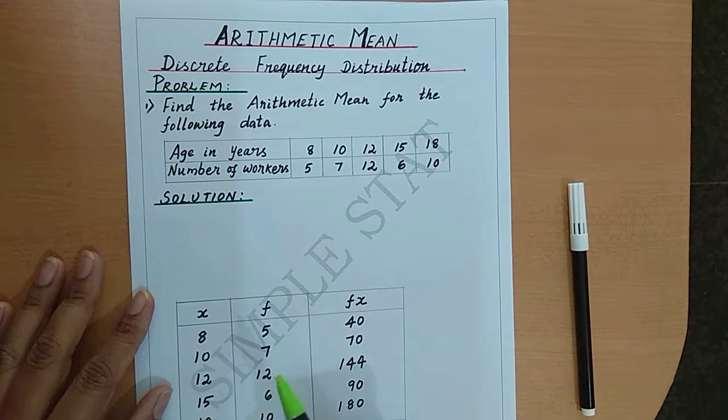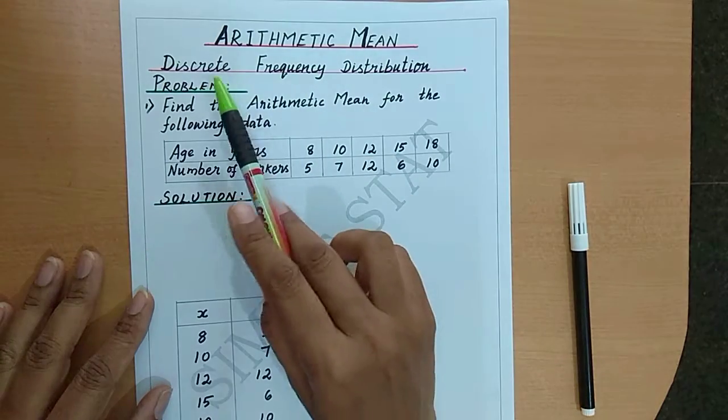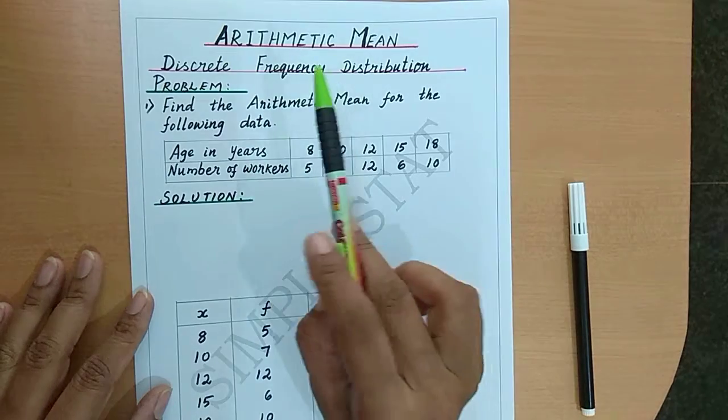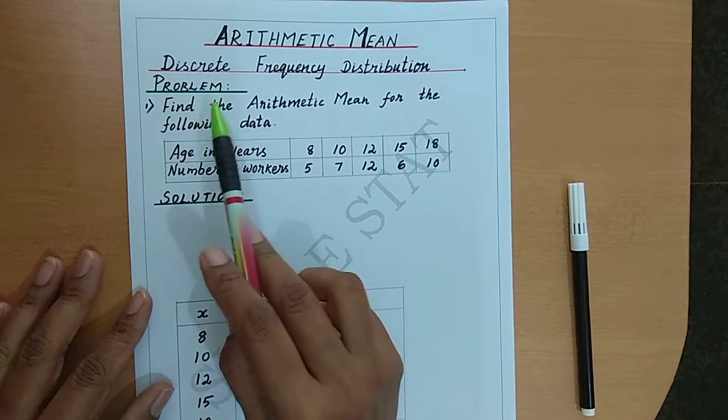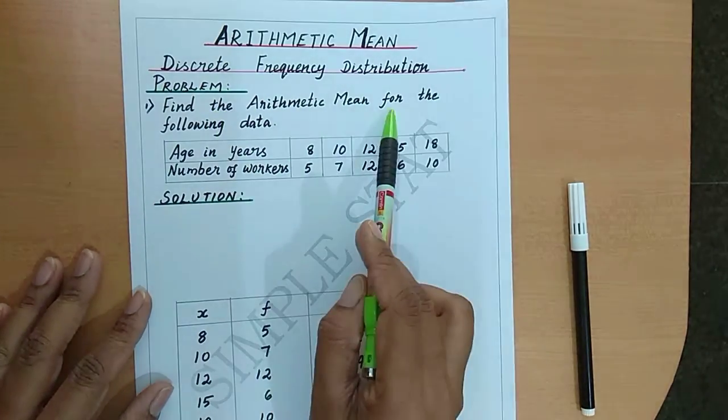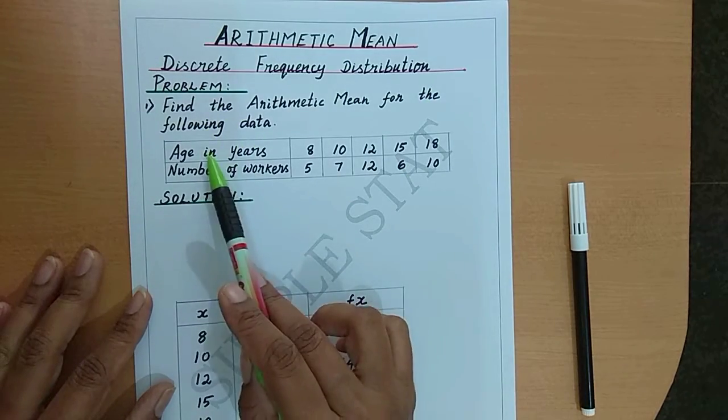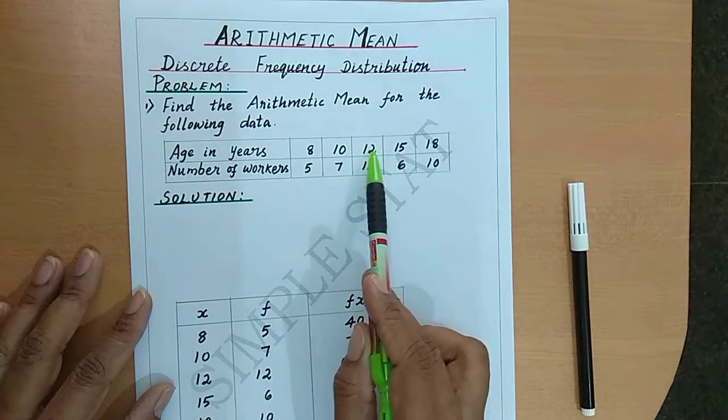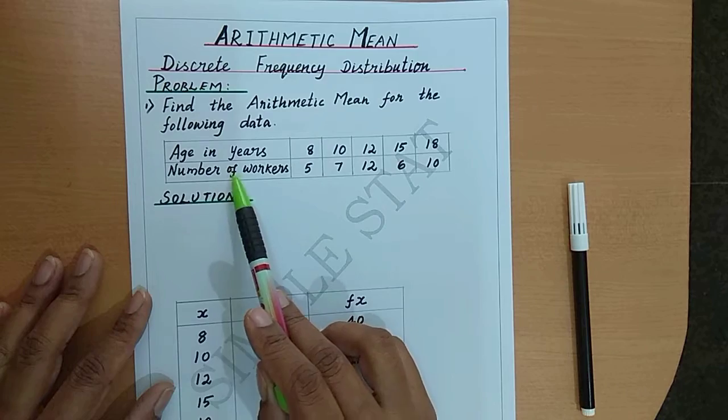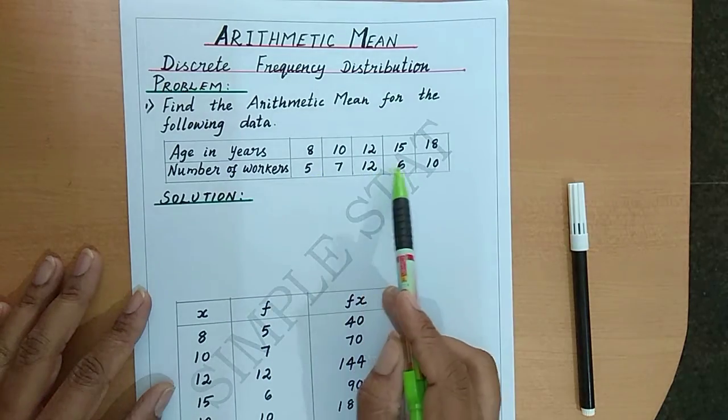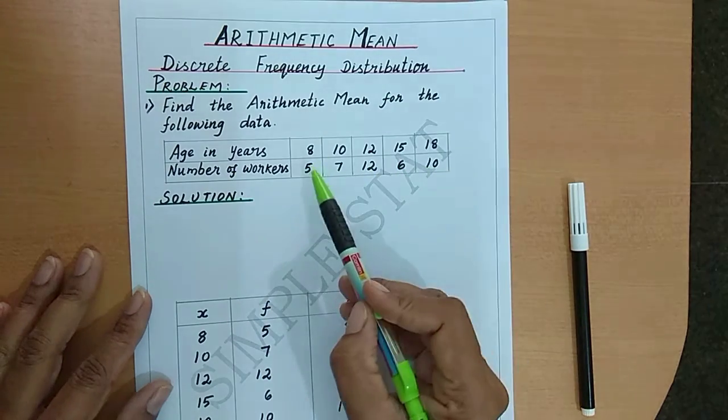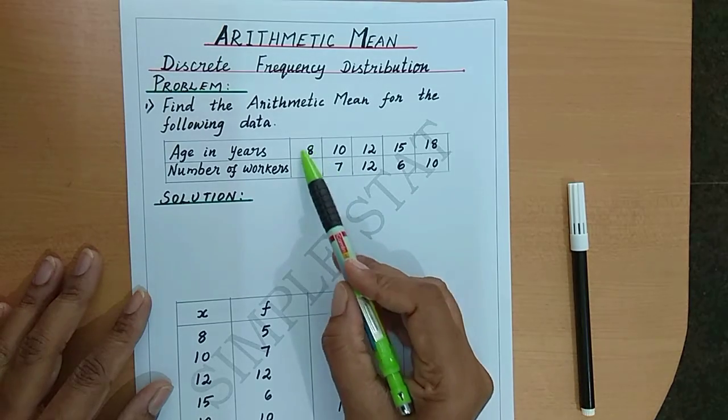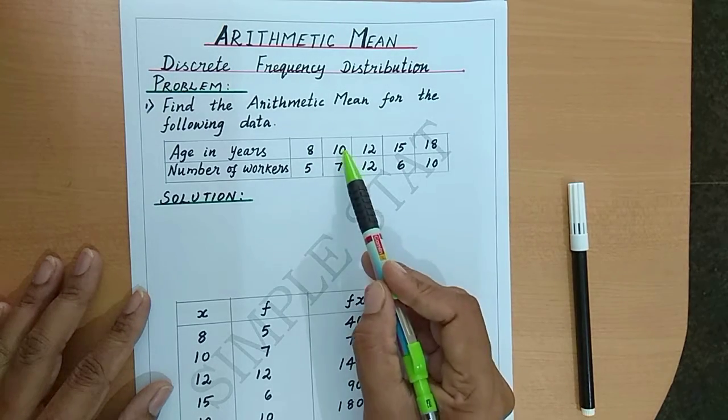Let's now discuss how to find arithmetic mean for a discrete frequency distribution. Given a problem: find the arithmetic mean for the following data. Age in years: 8, 10, 12, 15, 18, and number of workers: 5, 7, 12, 6, 10. This means that there are 5 workers in the age 8, 7 workers in the age 10, etc.